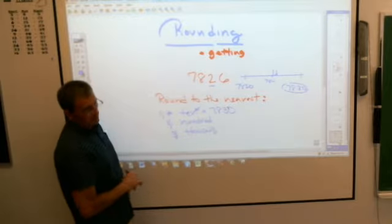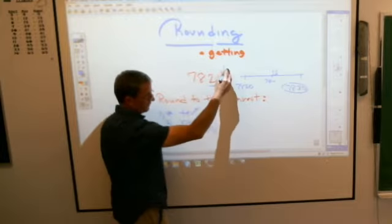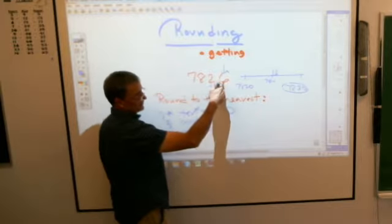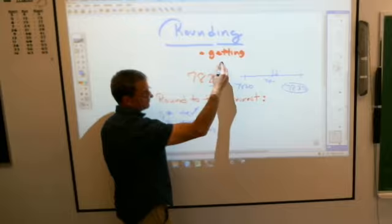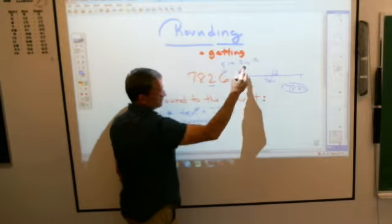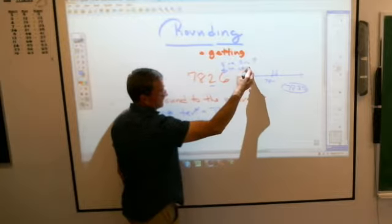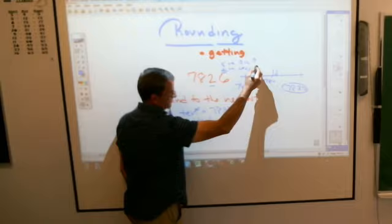So what number actually is the giveaway number? 6. Yeah, the number next to the number you're rounding. If that number is 5 or bigger, you round up. You go up. If it's 4 or less, it stays the same. You never subtract. It stays the same.